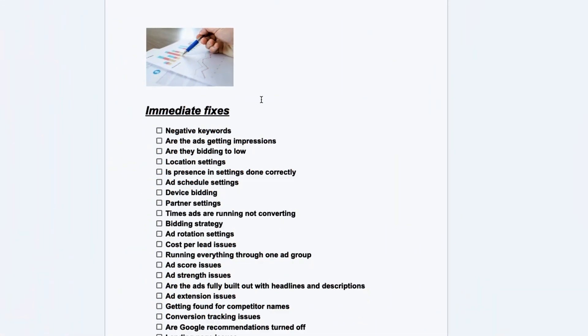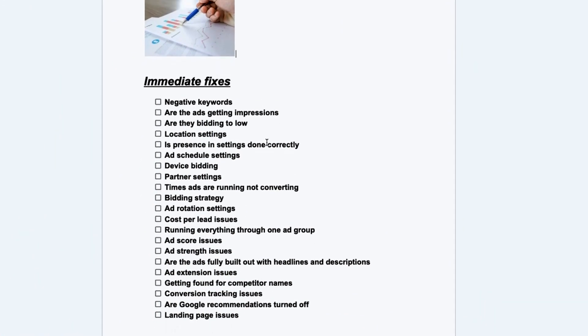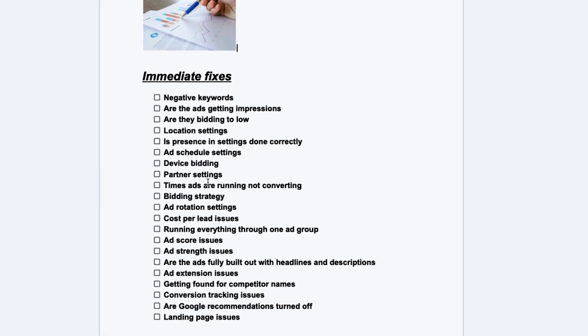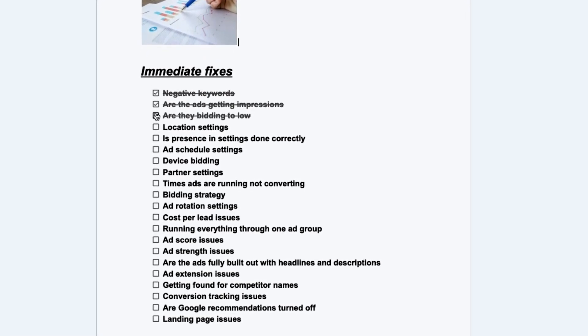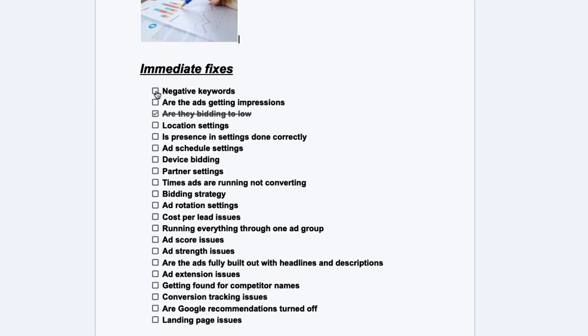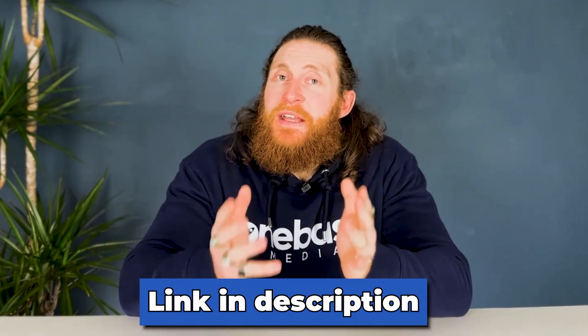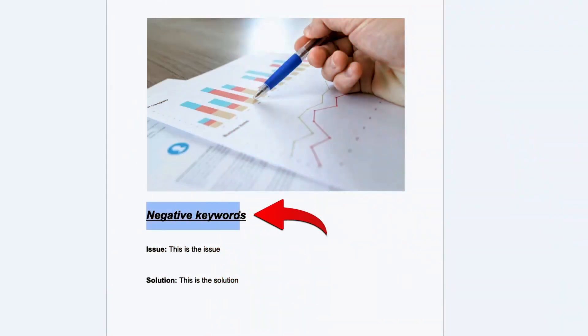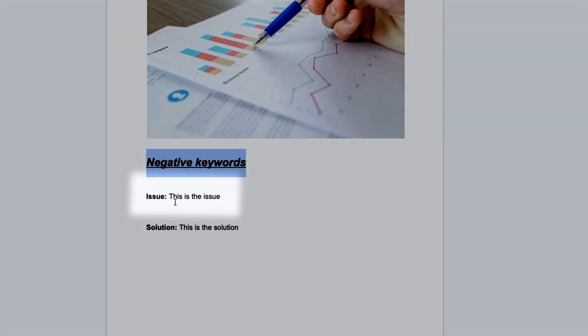We'll be using this document which has all the issues listed that come up when running a Google Ads campaign. You can tick each issue off as you go through them. The link for the document is in the description. Every single page will have the main issue on it — replace the image with a screenshot of the problem, write down the issue, and then write down the solution.